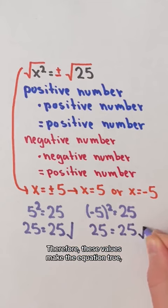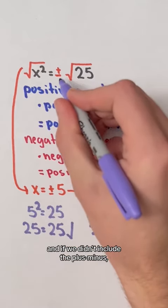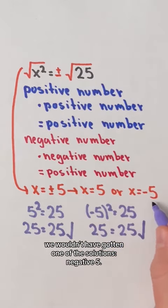Therefore, these values make the equation true, and if we didn't include the plus minus, we wouldn't have gotten one of the solutions, negative 5.